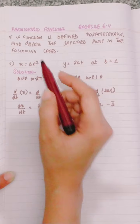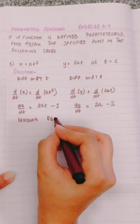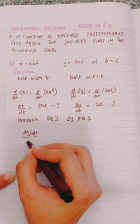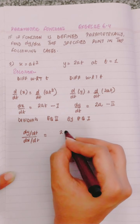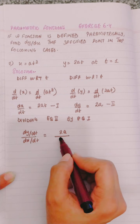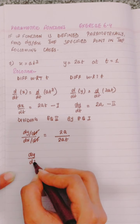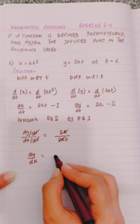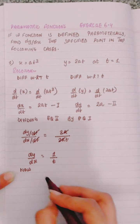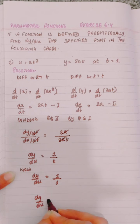We have to find dy over dx. Dividing equation 2 by equation 1: dy over dt divided by dx over dt is equals to 2a divided by 2at. The dt's cancel, and 2a cancels, giving dy over dx is equals to 1 over t. Now we have to find the value at t equals 1, so dy over dx is equals to 1 over 1, which gives dy over dx is equals to 1.